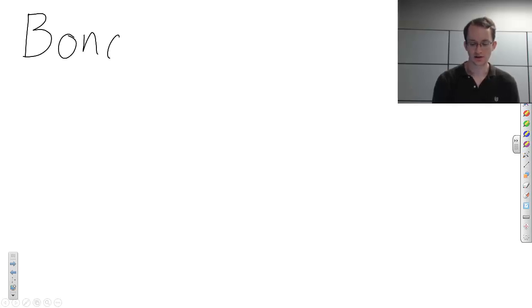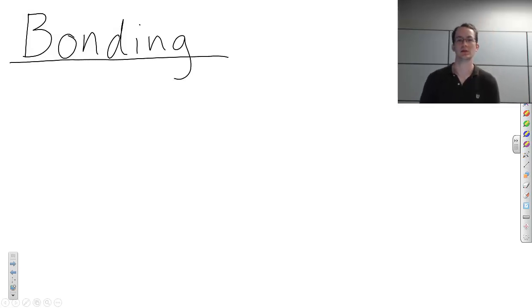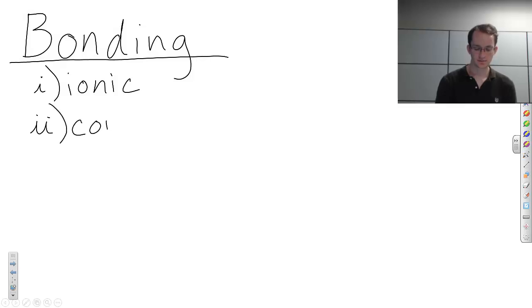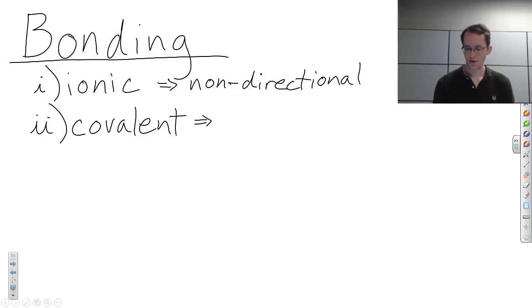And we need to go back to bonding. So the types of bonding that we see in ceramics are either ionic or they're covalent. So in an ionic bond these bonds are non-directional and they're made between positively and negatively charged atoms or ions. In covalent bonding we have directional bonding.